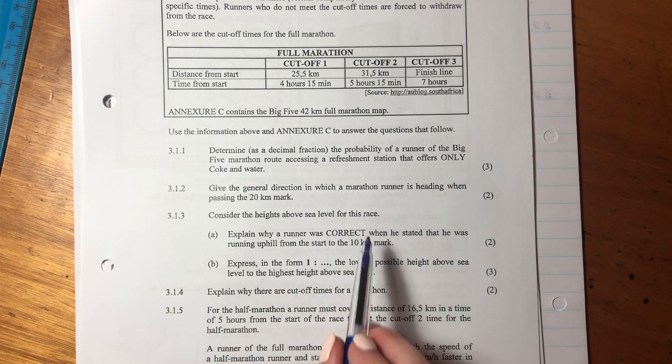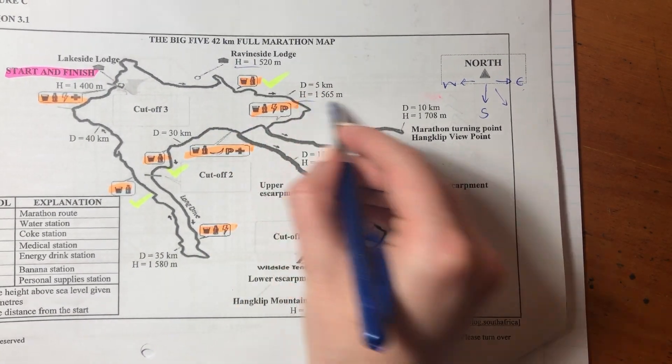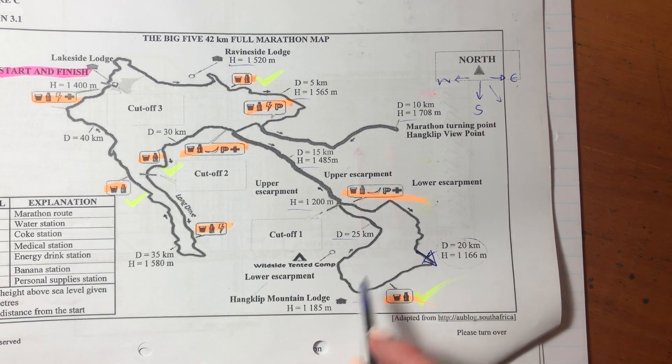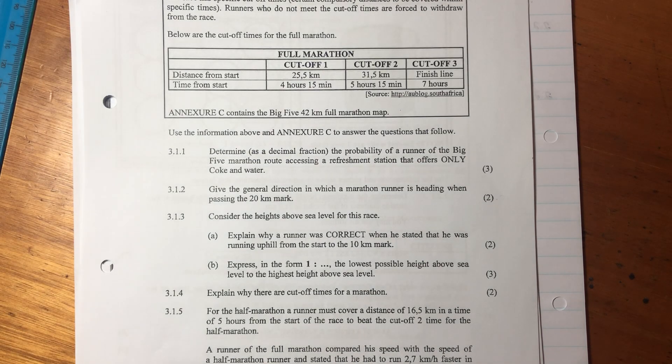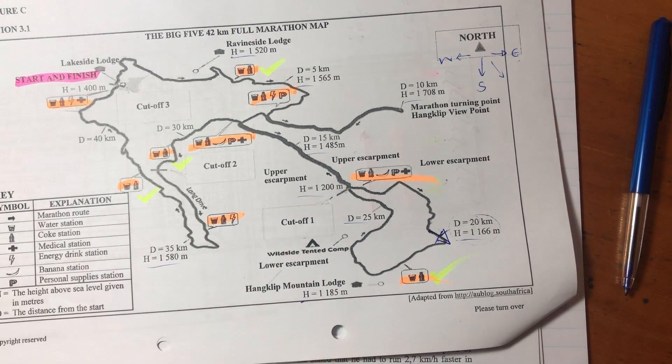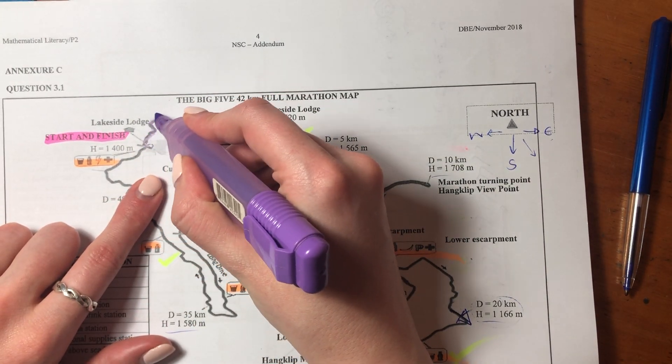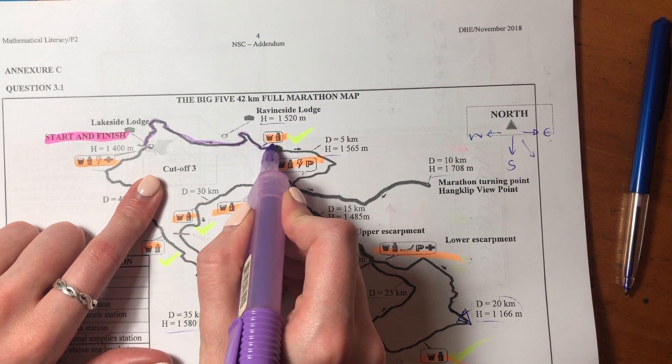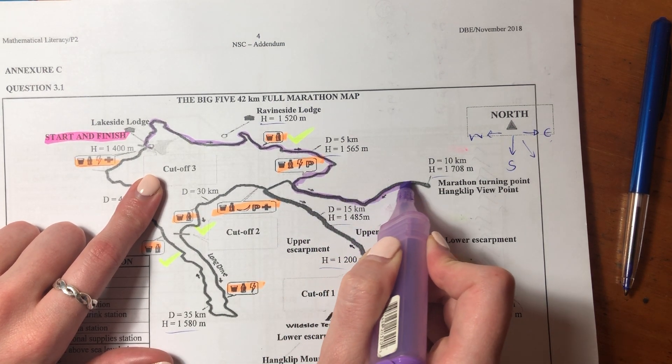Let's now go into the next question. It says, consider the heights above sea level for this race. Let's just quickly see what that means. So you see here, it has all these different heights, and all these heights are actually above sea level. Then it says, explain why a runner was correct when he stated that he was running uphill from the start to the 10-kilometer mark. So let us figure that out. I'm running out of highlighter colors here. Let's use purple. So he starts over here, and he's going to run to five kilometers, and then he's going to run over here to 10 kilometers.